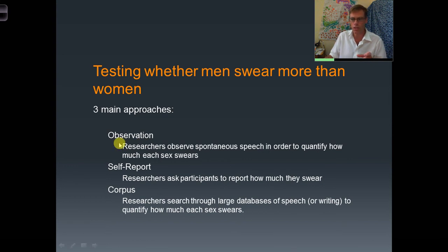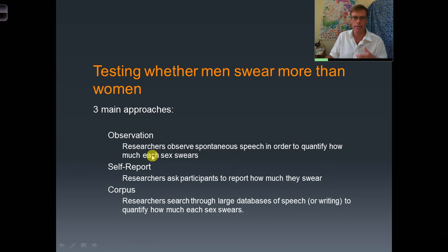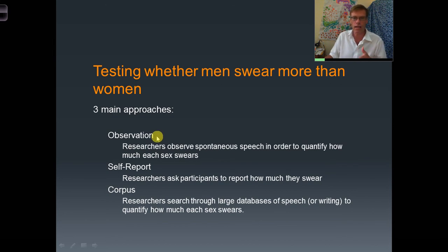Self-report is useful in that it's much quicker and easier to gather data than observation. Observation is challenging because it takes so much time and there are ethical issues — we have to determine whether we're licensed to observe people. There are certain places where we have expectations of privacy, and researchers have to follow ethical guidelines. Every university that does human subject research has a committee — an internal review board — that determines whether the proposed research is ethical and can go forward.